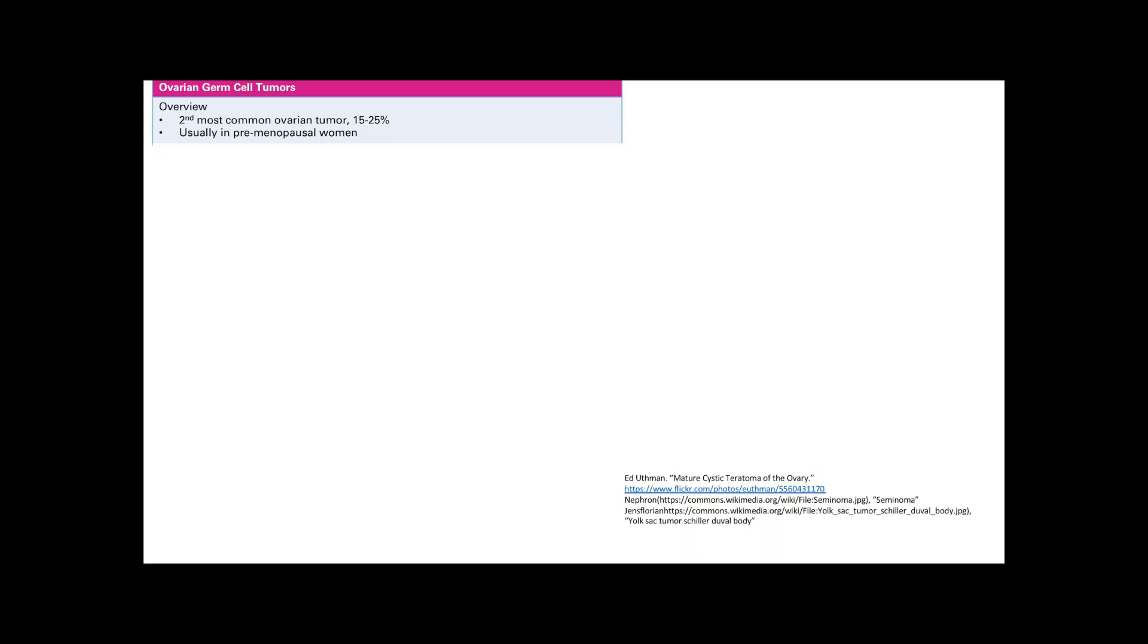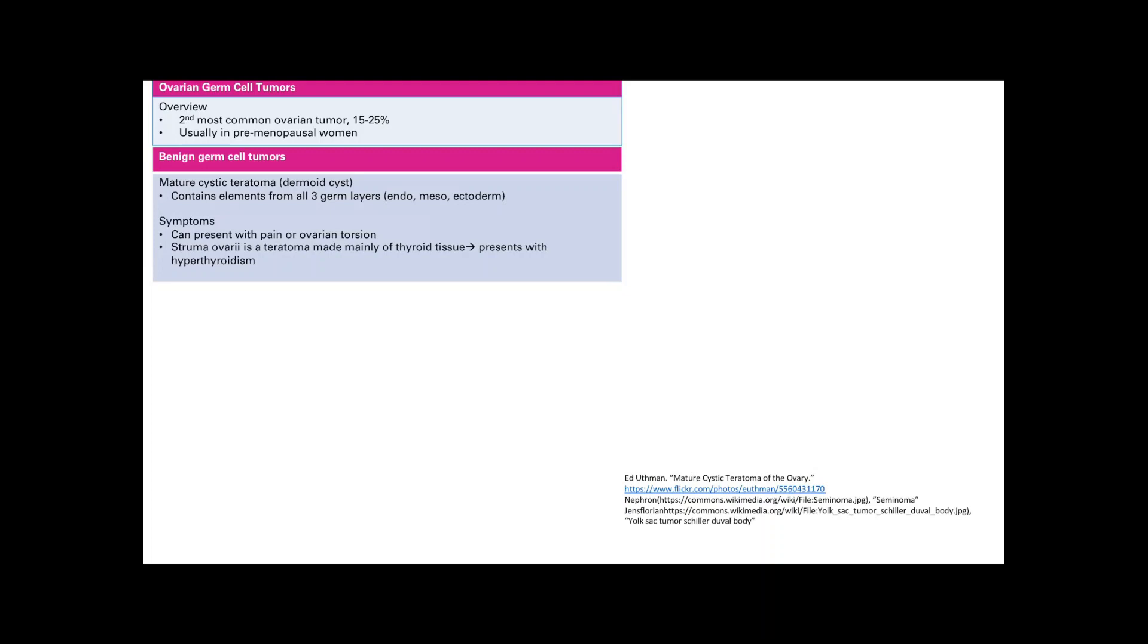This is mainly in premenopausal women. Benign tumors: there's a mature cystic teratoma, also known as a dermoid cyst. You have to know both names. This contains elements from all three germ layers—endoderm, mesoderm, ectoderm. This is a picture of it.